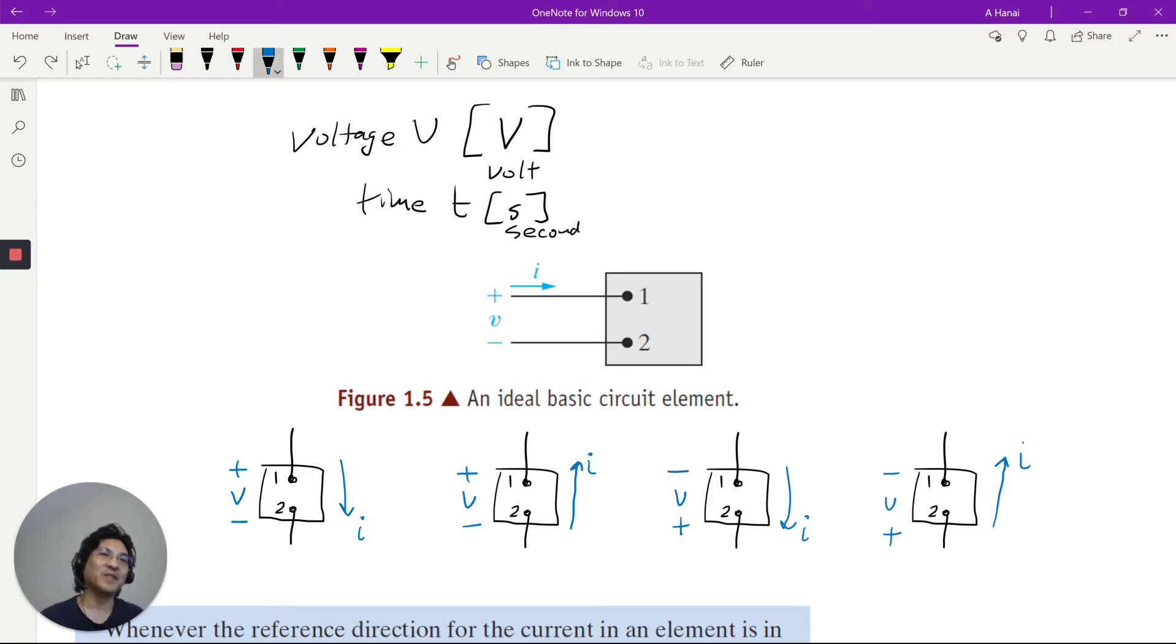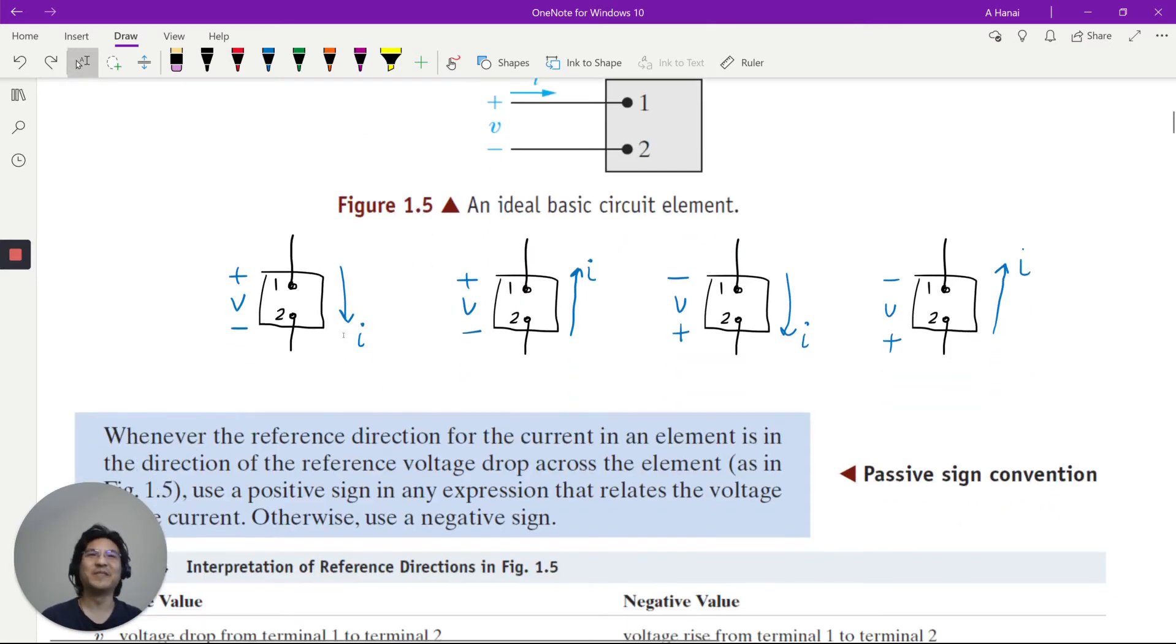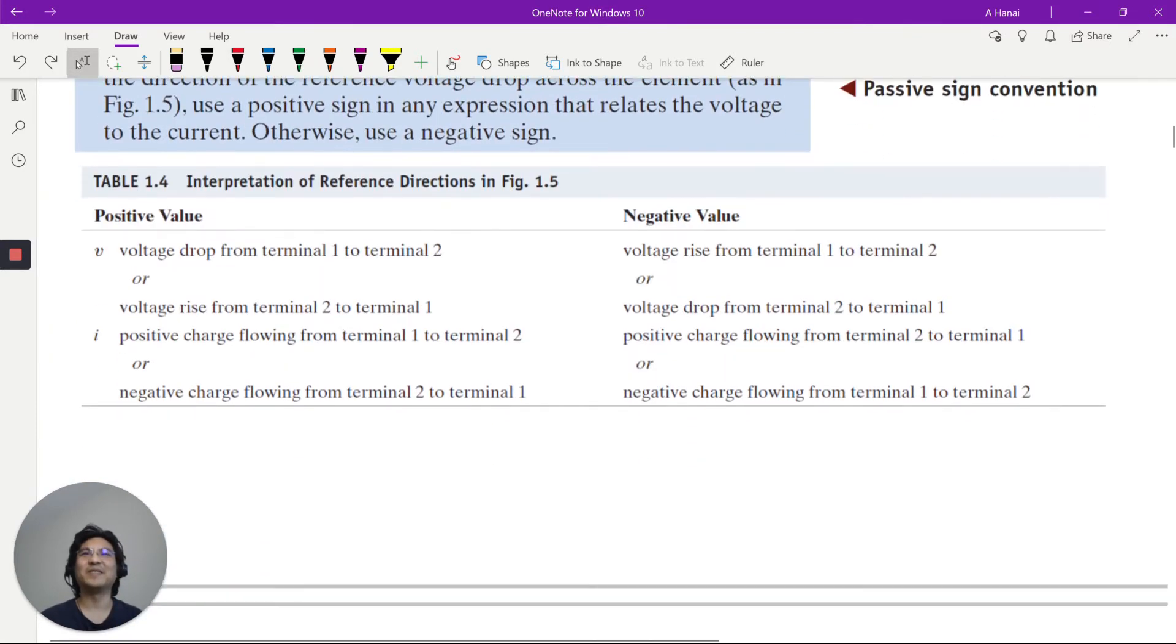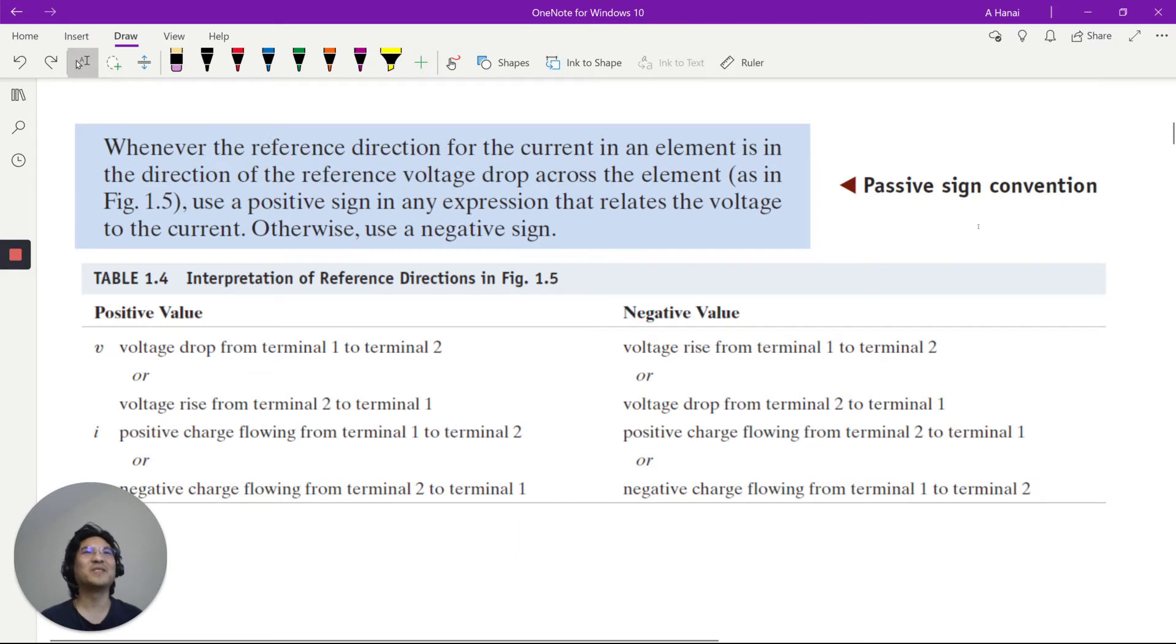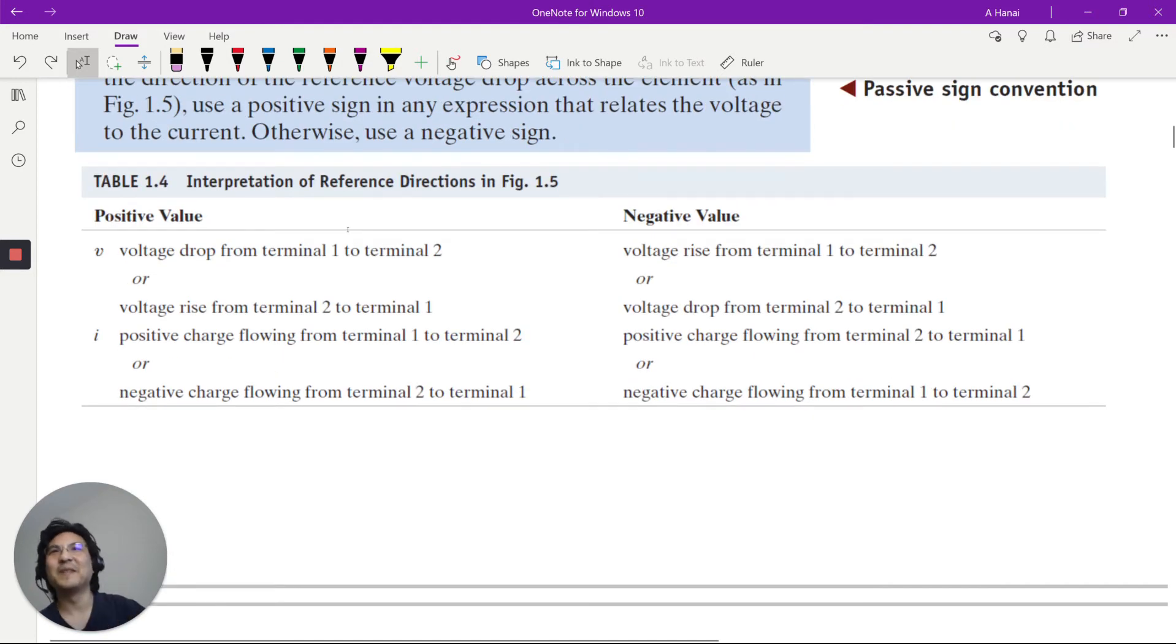But that brings us to which way is considered positive. There's this like, lots of words, and then it looks like, what does all this mean? Like when the reference direction for the current is in the same direction as the reference voltage drop, that's positive. Otherwise it's negative. What does that mean? Here's the takeaway. Voltage drop is positive. Right here. Positive voltage drop.